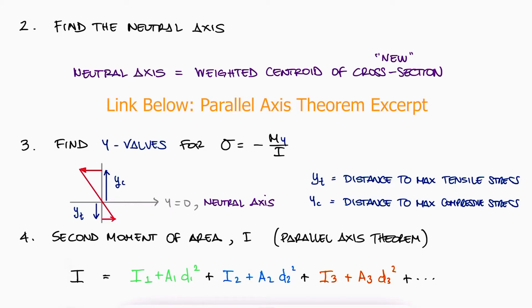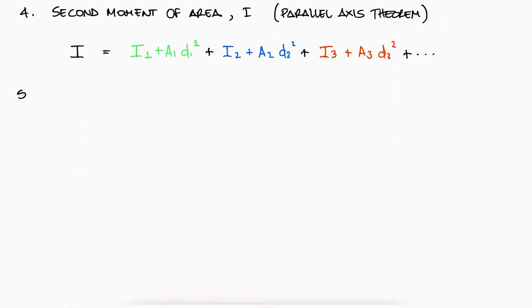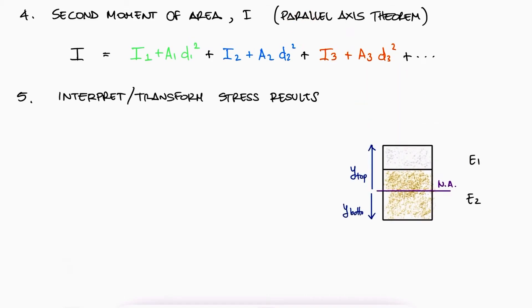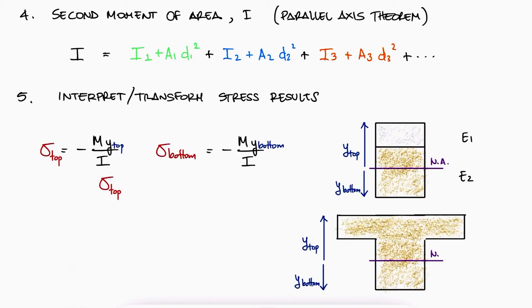The moment M in the my over i equation is found completely separately from the transformed section process, and can be found by performing a shear and bending moment diagram. Once we have all of these values, substituting them for both y-values, the top and the bottom, would result in the stresses found at the top and the bottom for material 2. If the top or the bottom is in fact made originally from material 2, the stress expression is accurate and there's no need for further calculations.